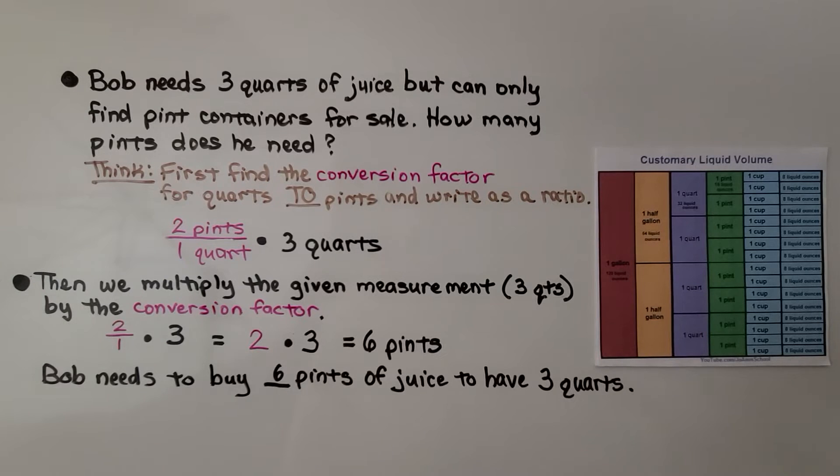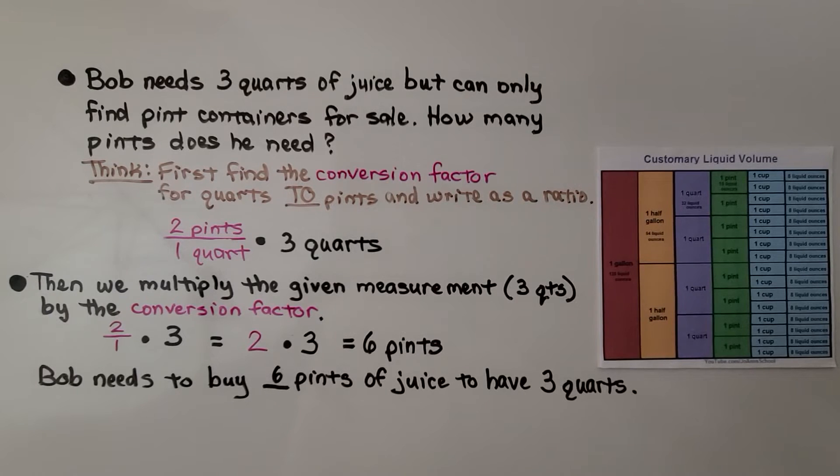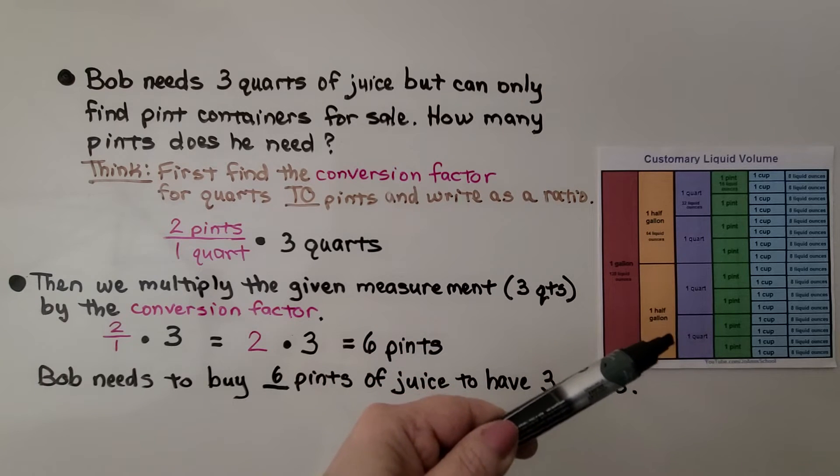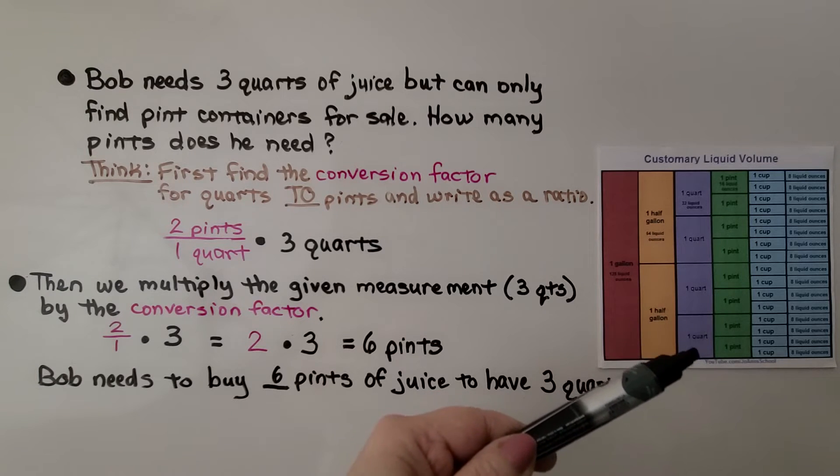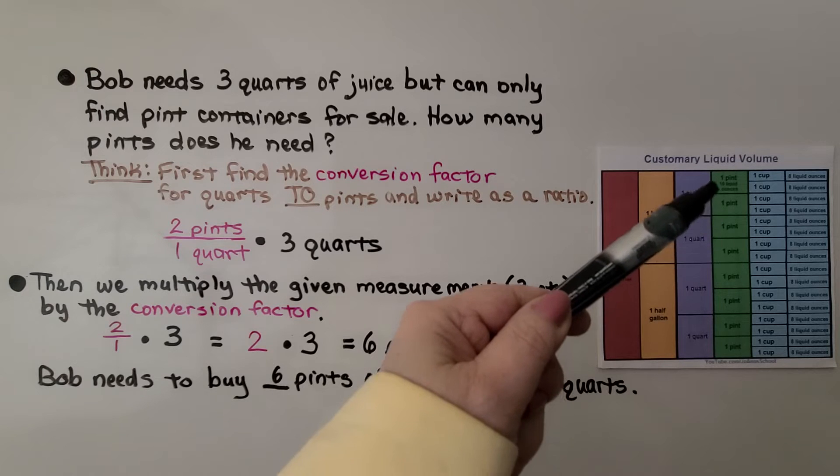Bob needs 3 quarts of juice but can only find pint containers for sale. How many pints does he need? So we think. First, find the conversion factor for quarts to pints and write it as a ratio. If we look on this chart, and I have a copy of this chart you can print for yourself on my Joanne School Facebook page in the Charts, Grids, Tables album. We're going to go from a quart to 2 pints.